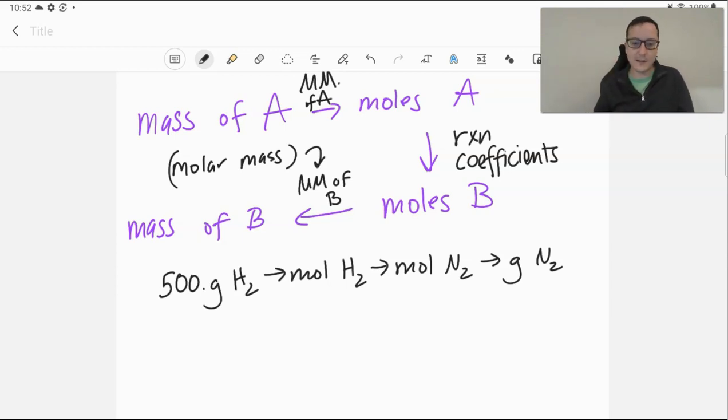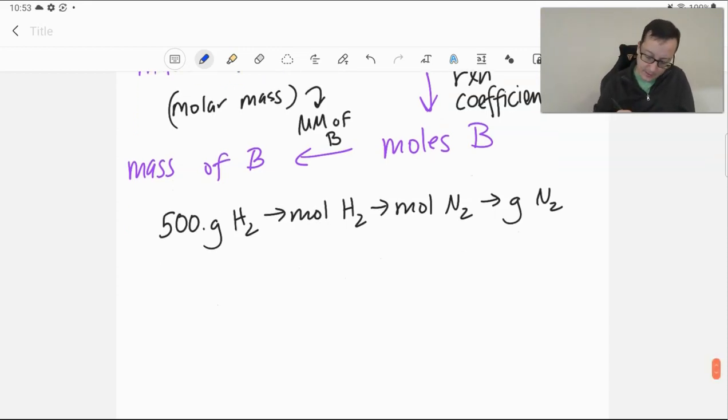So, if we were to plan this out, we're really going from 500 grams of hydrogen, to moles of hydrogen, to moles of nitrogen, to grams of nitrogen. Because that's what the problem is asking us to do. So, if we're to set this up, we simply need to look up our three conversion factors. We have the two molar masses we're going to need, as well as the coefficients. We've already got the coefficients from balancing. So, we need the molar masses. Let's go through it.